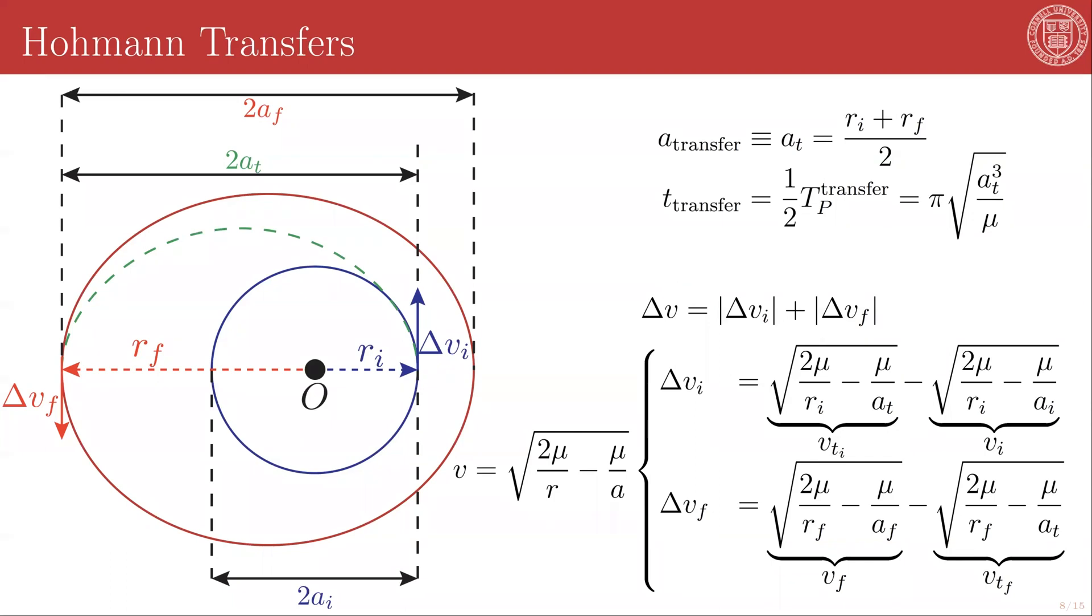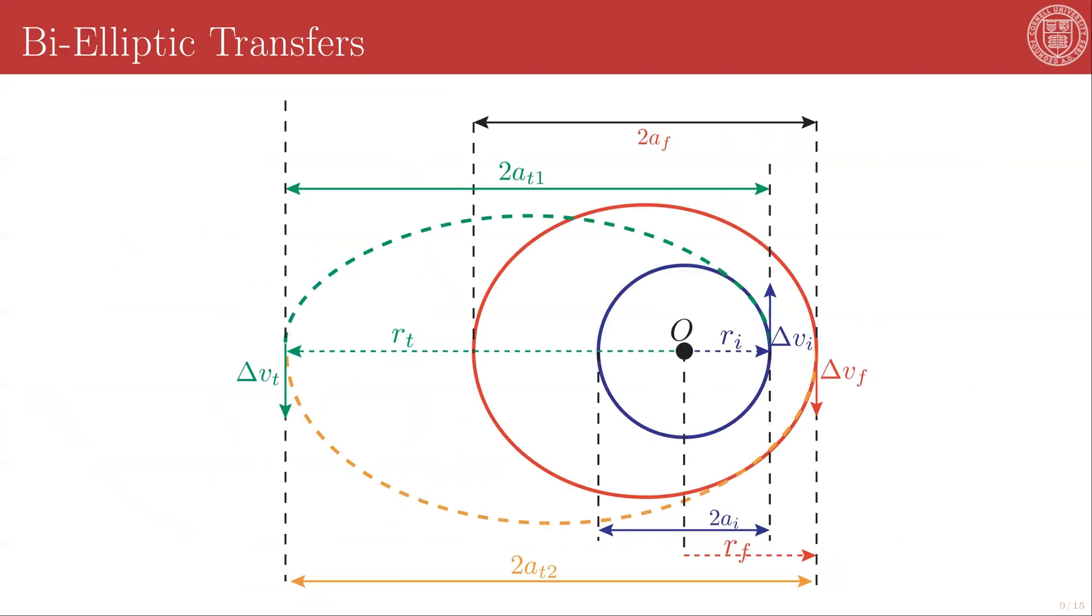I said that the Hohmann transfer was the most delta V efficient way to transfer between two coplanar orbits with some caveats. And the caveat is that there exists very specific configurations of your initial and final orbits where you can actually squeeze out a little bit more efficiency by performing three burns instead of two burns. And what that looks like is essentially stacking two Hohmann transfers on top of each other. So you start from your initial orbit. You can do a tangential burn. You put yourself on a transfer ellipse that takes you to an empty point in space. You burn again and return back to your intended final orbit. How does this gain us anything?